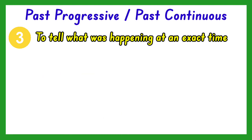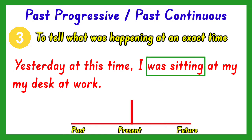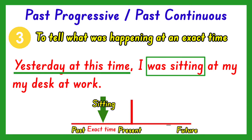Another example: Yesterday at this time, I was sitting at my desk at work. The past progressive verb in this sentence is was sitting. The sentence tells what was happening at an exact time yesterday. That is why the past progressive tense is used.